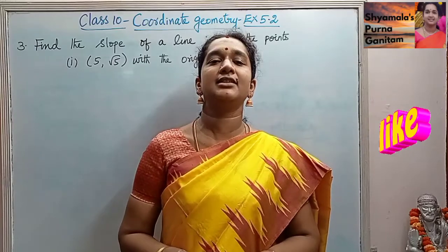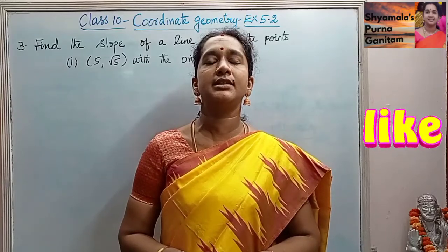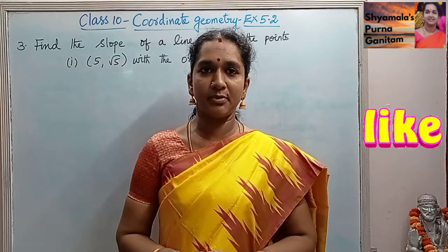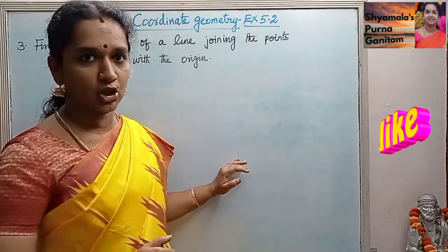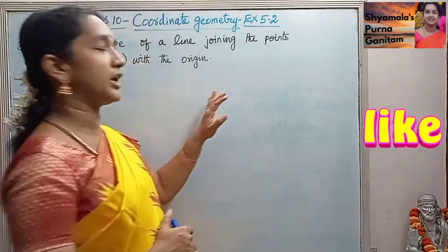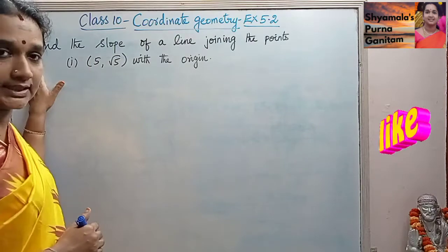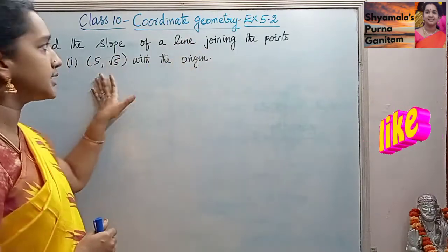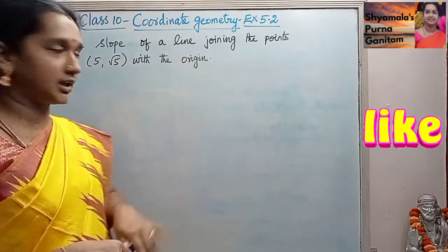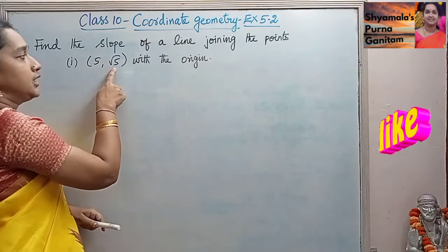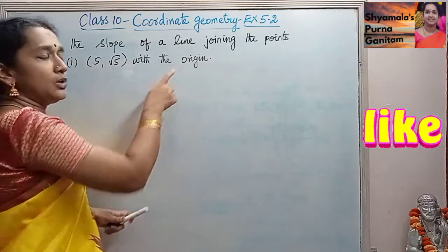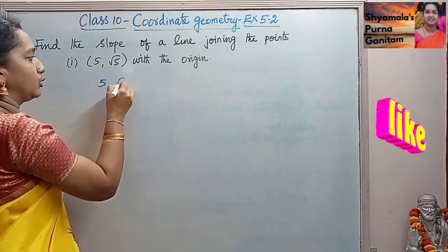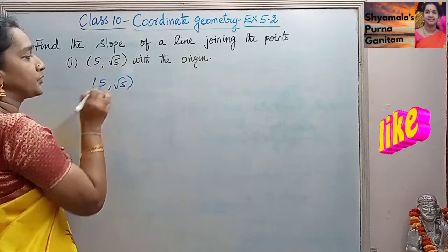Good morning students. In this class I will be doing Class 10 Samacheer Kalvi Syllabus, or Matriculation Syllabus, 5th Chapter — Coordinate Geometry, Exercise 5.2, 3rd problem. Find the slope of a line joining the points. Two points are given: one is (5, √5) and the origin (0, 0).